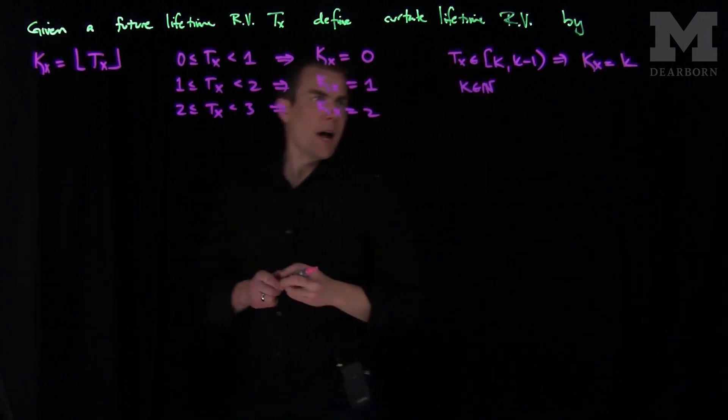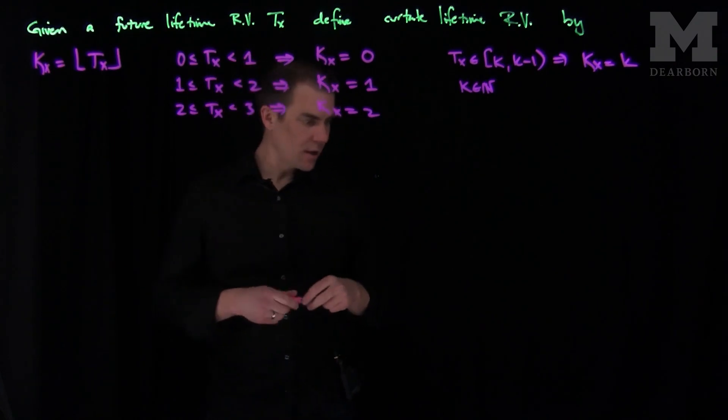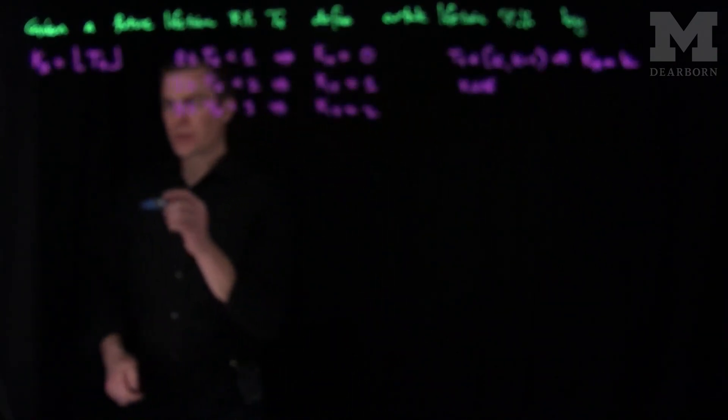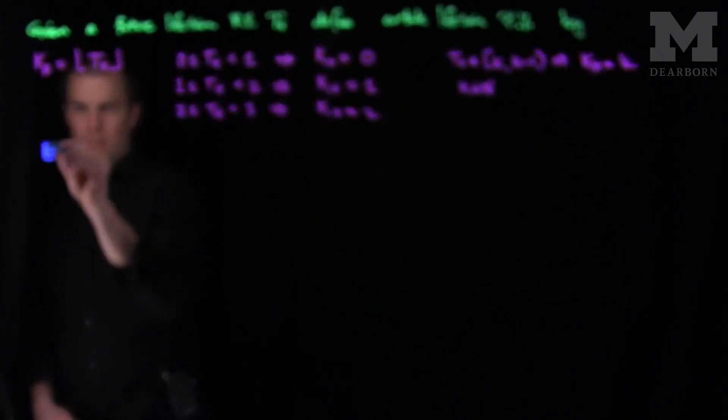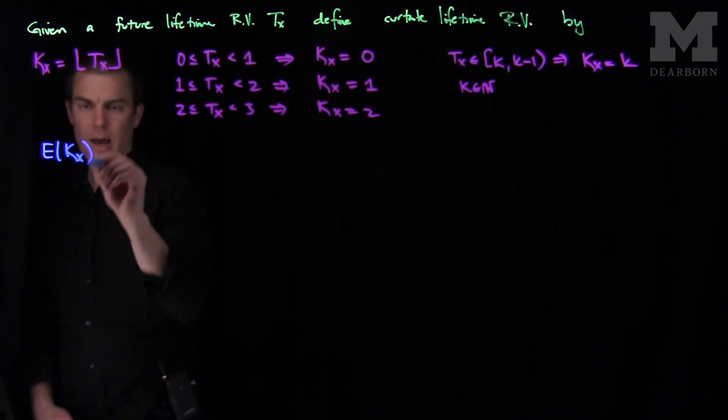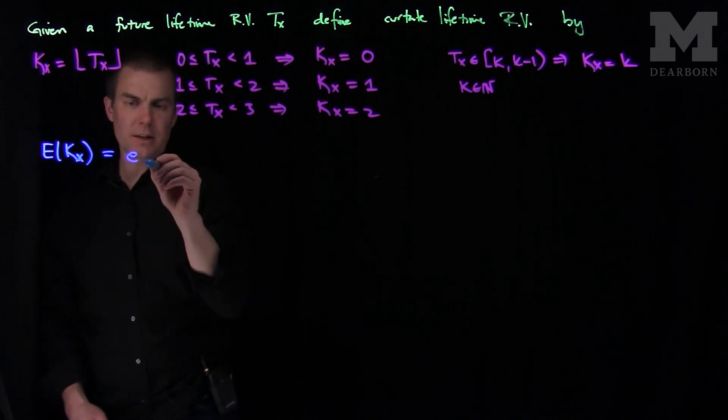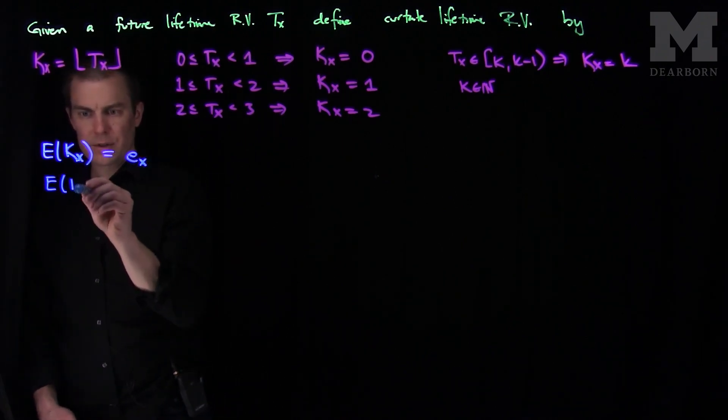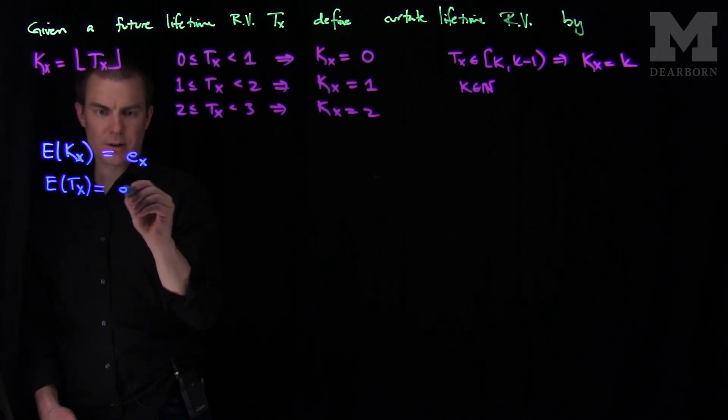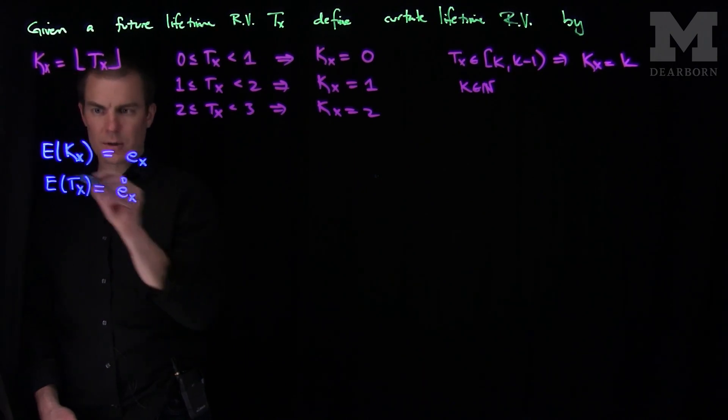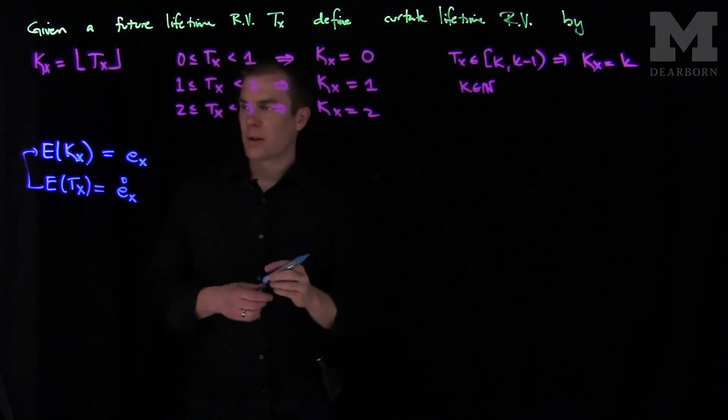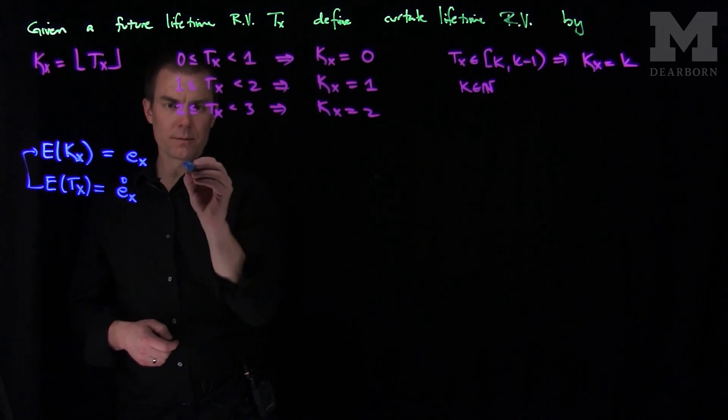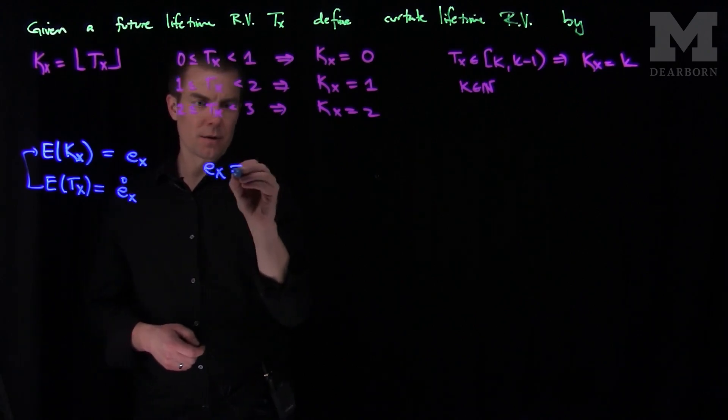Now we have a sense of what this function does - it caps off the random variable. We can ask the question, what is the expected value of kx? The expected value of kx is written as e sub x with no circle on top. Recall that the expected value of just Tx itself, the continuous random variable, is e x circle. So we're interested in understanding this function, the integral of the floor. And so what will this be?